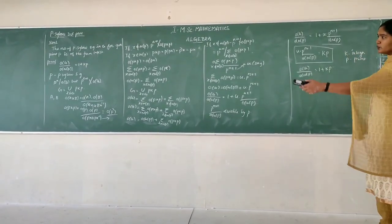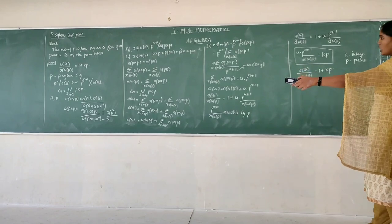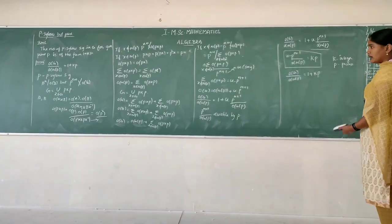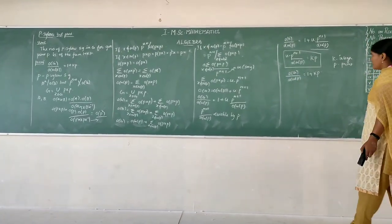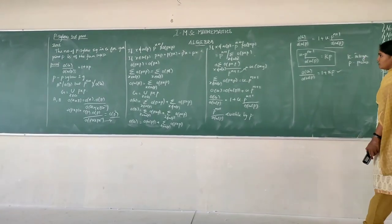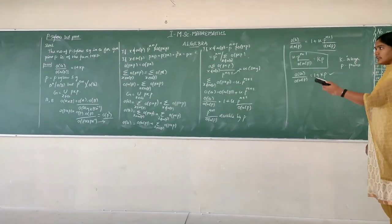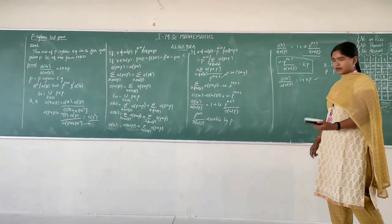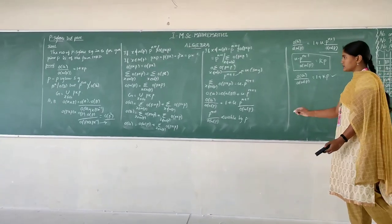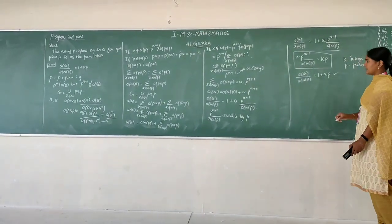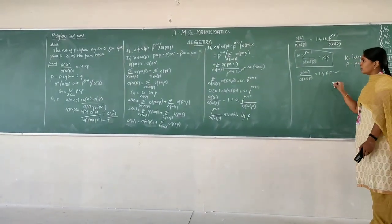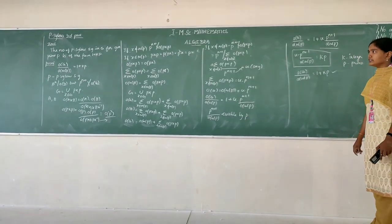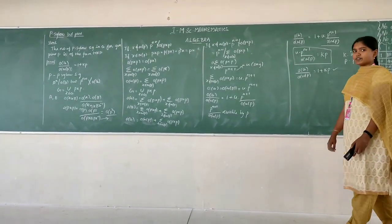We have proved that the order of G divided by the order of the normalizer of P equals 1 plus kp, which means the number of Sylow p-subgroups for a given prime must be in the form of 1 plus kp. This proves Sylow's Third Theorem. Thank you.